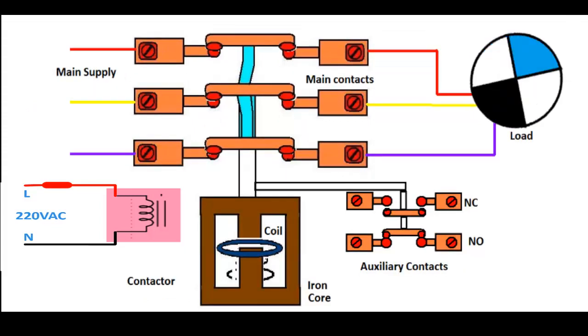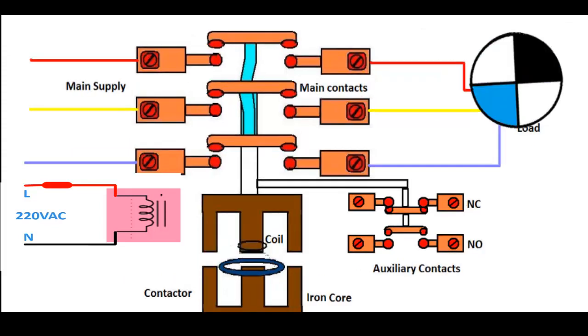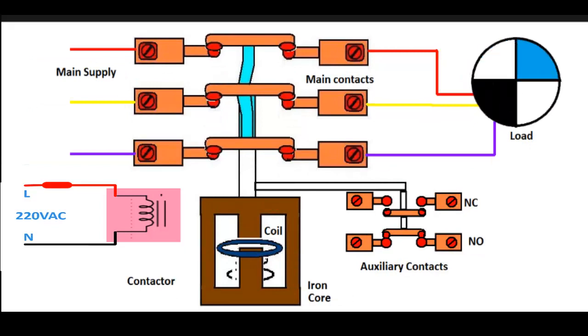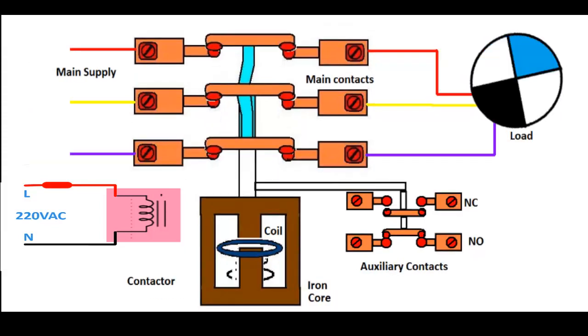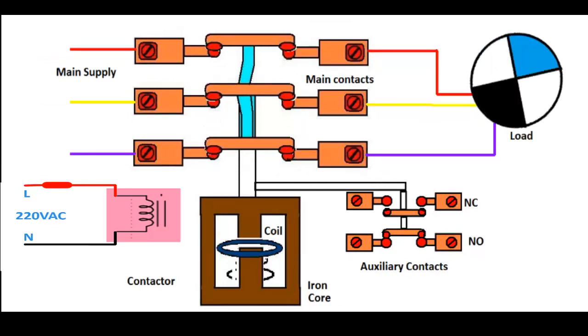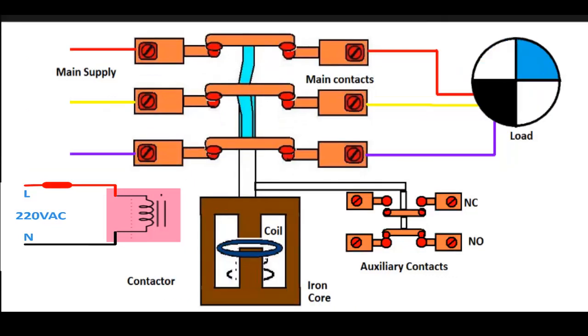And after that, an electrical machine will be supplied electrical power through this contactor. At the same time, our auxiliary contact will also change their position. That is a normally closed contact will now become open and our normally open contact will now become closed. And by using this auxiliary contact in our control circuit, we can perform different functions.